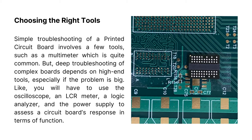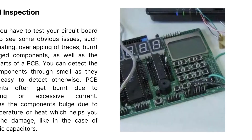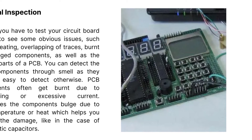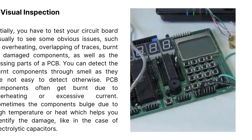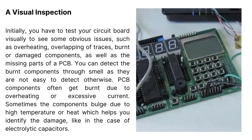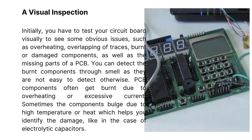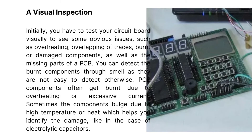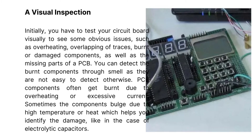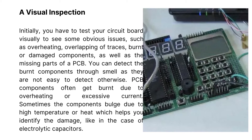A visual inspection: initially you have to test your circuit board visually to see some obvious issues, such as overheating, overlapping of traces, burnt or damaged components, as well as the missing parts of a PCB. You can detect burnt components through smell, as they are not easy to detect otherwise. PCB components often get burnt due to overheating or excessive current. Sometimes the components bulge due to high temperature or heat, which helps you identify the damage, like in the case of electrolytic capacitors.